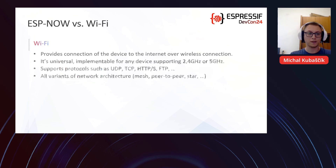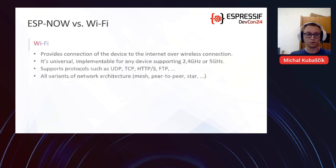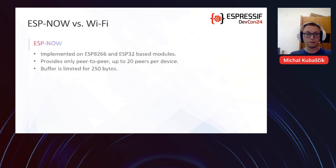Wi-Fi provides connection of the device to the internet over wireless connection. It is universally implementable for any device supporting 2.4 GHz or 5 GHz, and supports many protocols such as UDP, TCP, HTTP, HTTPS, FTP, and supports all variants of network architecture like mesh, peer-to-peer, and star. ESPNOW is implemented on ESP8266 and ESP32-based modules and provides only peer-to-peer communication.